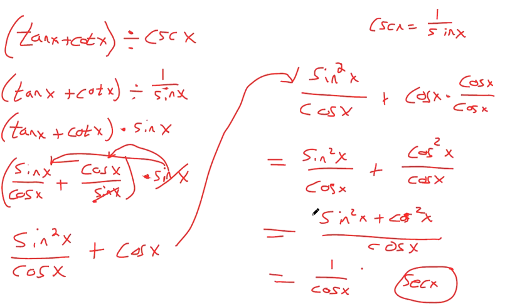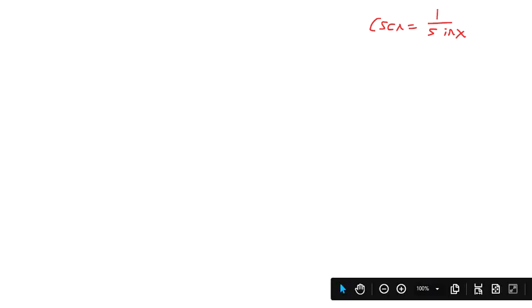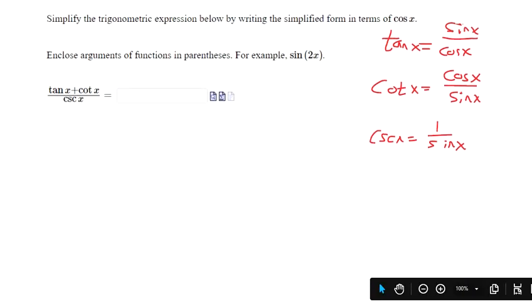I know that cosecant could be one over sine. So the strategy I think the textbook emphasizes and what I emphasize is putting things in terms of sine and cosine.